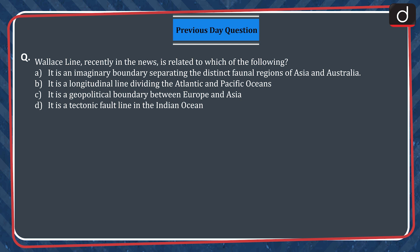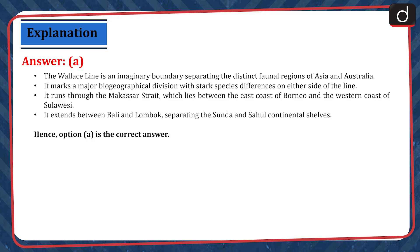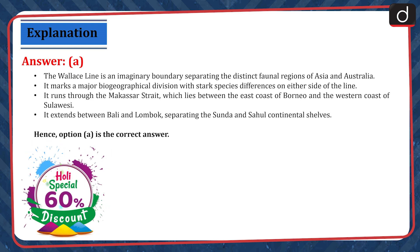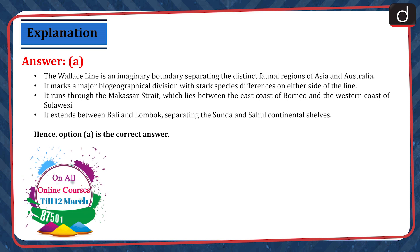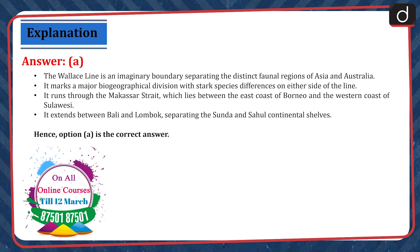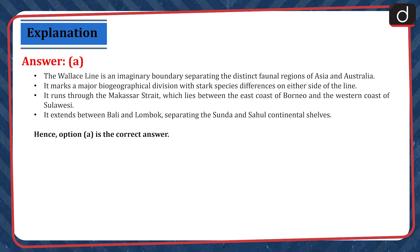The correct answer is Option A. The Wallace Line is an imaginary boundary separating the distinct faunal regions of Asia and Australia. It marks a major biogeographical division with stark species differences on either side of the line. It runs through the Makassar Strait, which lies between the east coast of Borneo and the western coast of Sulawesi. It extends between Bali and Lombok, separating the Sunda and the Sahul continental shelves. Hence, Option A is the correct answer.